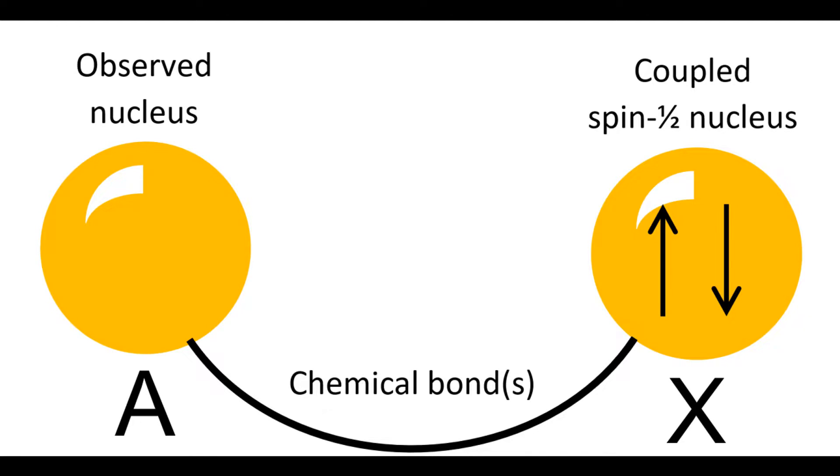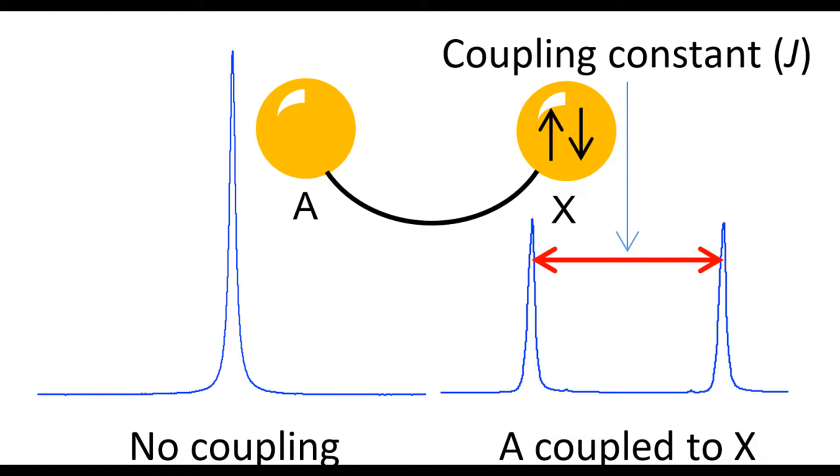The resonant frequency of the observed nucleus A is dependent on the spin alignment of the coupled nucleus X. A's signal is split into two equal parts because X is effectively equally divided between alignments.